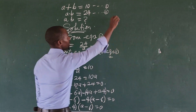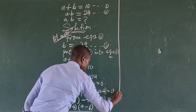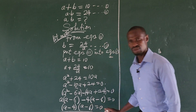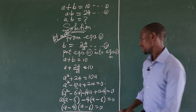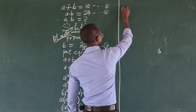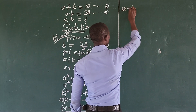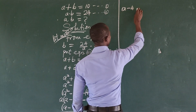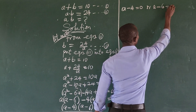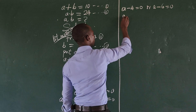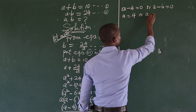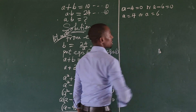We apply the zero product rule, equating each factor to zero. This gives us a minus 4 equals zero or a minus 6 equals zero. Therefore a equals positive 4 or a equals positive 6.